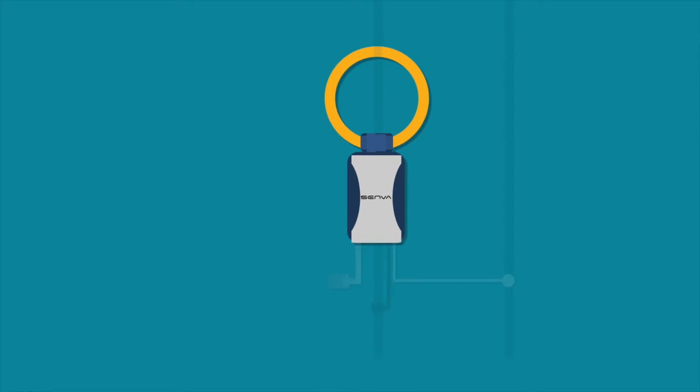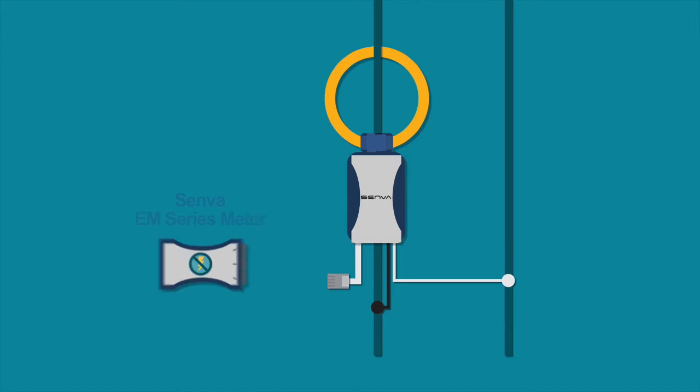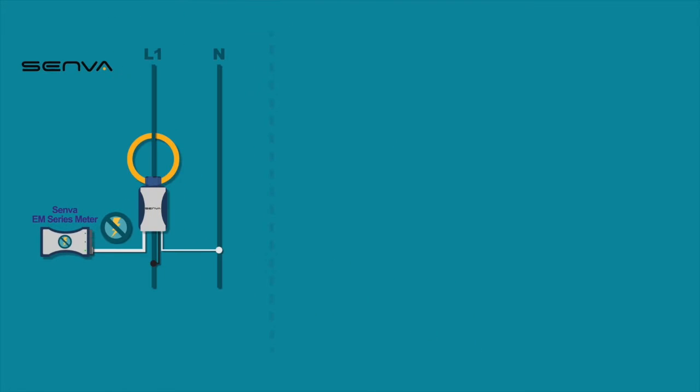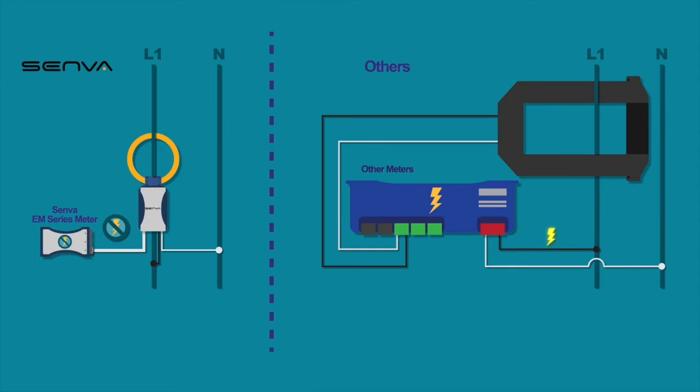The safety feature on the EMRS 45 meter begins with Senva's Current Voltage Transducer, or CVT. CVTs are designed to keep the high voltage connections at the CT level and away from the meter, making the EMRS 45 a low voltage device. This is safer than traditional meters, which require high voltage connections at their meter base.